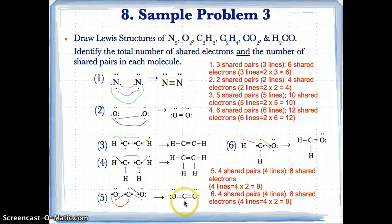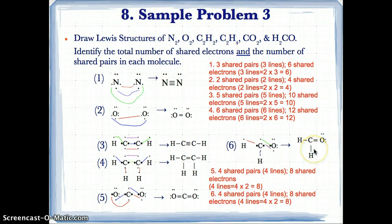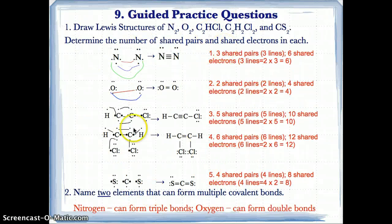CO2 has four shared pairs and eight shared electrons from four lines. H2CO also has four shared pairs and eight shared electrons from four lines. Remember, one line equals two shared electrons, so four lines equals eight. Two key elements that form multiple covalent bonds are nitrogen, which forms triple bonds, and oxygen, which can form double bonds.